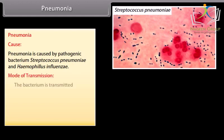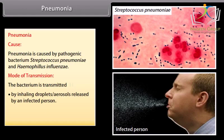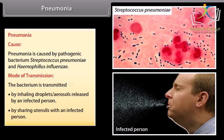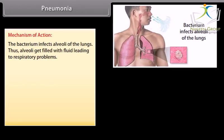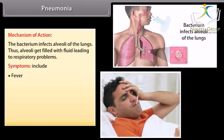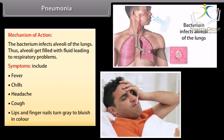Pneumonia. Mode of transmission: the bacterium is transmitted by inhaling droplets and aerosols released by an infected person or by sharing utensils with an infected person. Mechanism of action: the bacterium infects alveoli of the lungs. Thus, alveoli get filled with fluid leading to respiratory problems. Symptoms include fever, chills, headache, cough, and lips and fingernails turn grey to bluish in color.